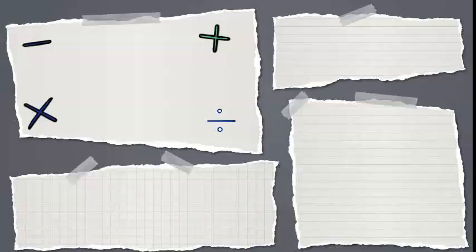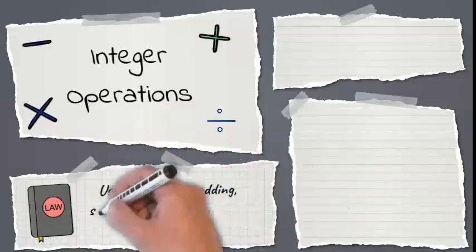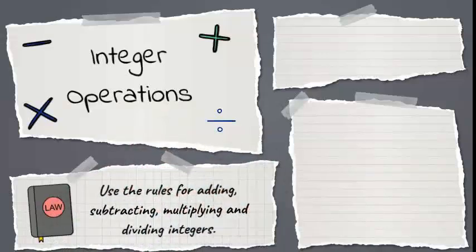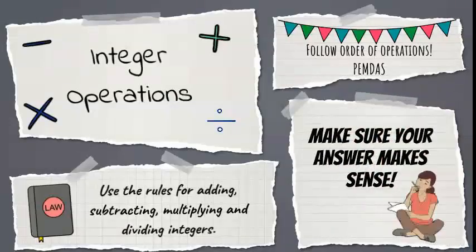And that, my friends, is how to perform integer operations. Remember to use the rules for adding, subtracting, multiplying, and dividing integers. As long as you're following the rules, you can't go wrong. Always follow order of operations — PEMDAS. Lastly, after you get an answer, it helps to check to make sure your answer makes sense. Catching answers that seem ridiculous will help catch some mistakes. You are now officially authorized to perform integer operations. Congratulations!